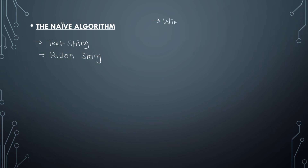In the naive algorithm, we're going to be using the window sliding technique. For people who don't know what that is, it's basically a common tool used to solve DSA questions — you take a block of some particular size and you slide that block one by one till you cover all possible cases. We're going to be using this in our naive algorithm, sliding the pattern one by one and checking for a match.